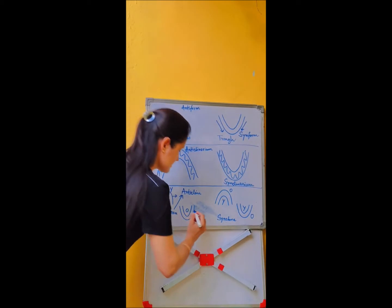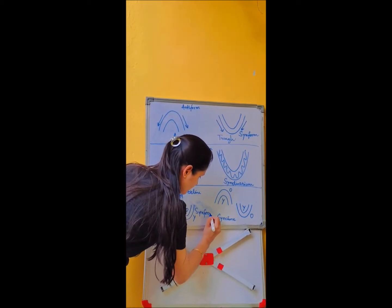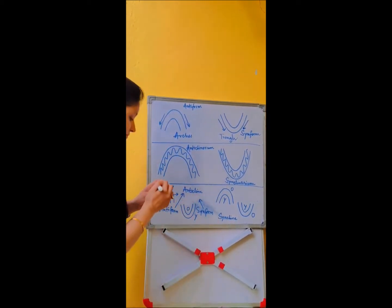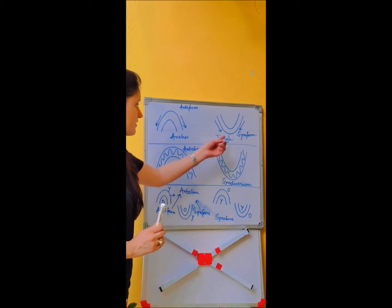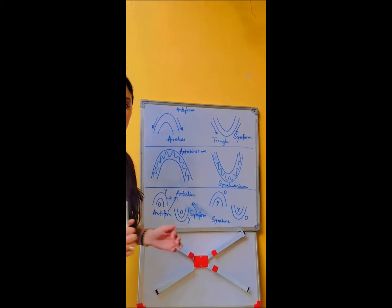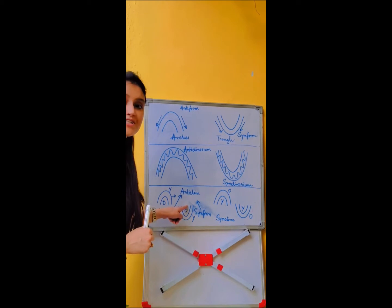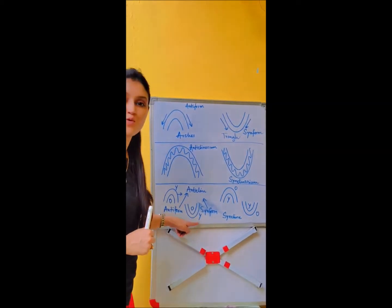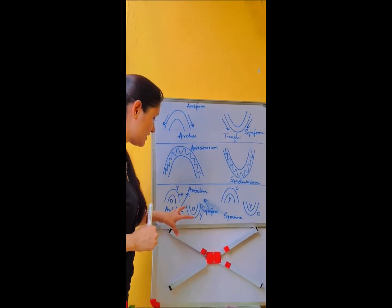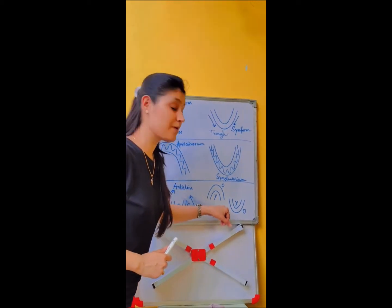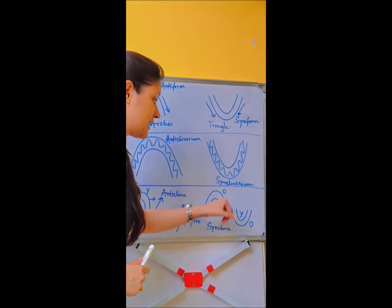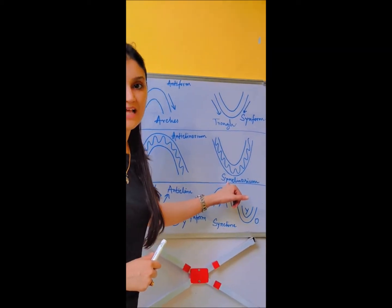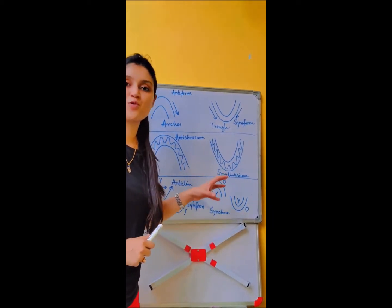And this is synform anticline — the shape represents the synform where the closure is downwards and both limbs dip towards each other, but the older rocks are exposed at the core and younger rocks at the outer area. So this is anticline but the shape is synform. Now coming to the syncline part, you can see the shape is antiform, but in syncline the older rocks are exposed at the outer side and the younger rocks are exposed at the core.